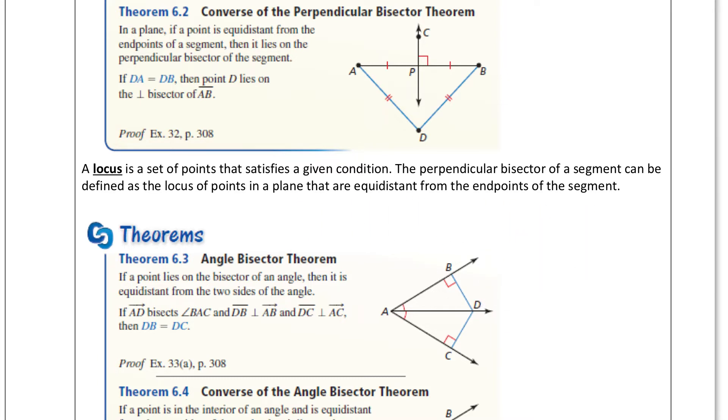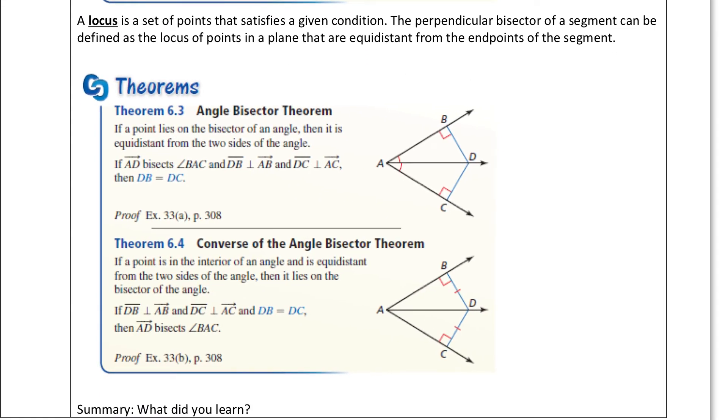Here is the next theorem, the angle bisector theorem. What we have is if a point lies on the bisector of an angle, so if it's on this bisector, then it is equidistant from the two sides. Now we're saying that this distance right here and that distance will be the same as long as it's on this angle bisector. And how we measure distance is perpendicular. You can't measure it this way, you can't measure it that way. You measure it perpendicular to the segment because that's going to be the shortest distance, and these will end up being congruent.